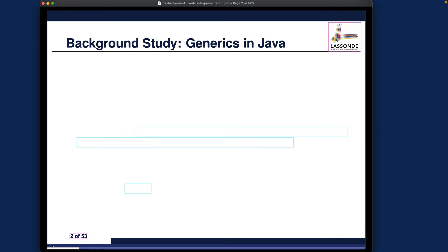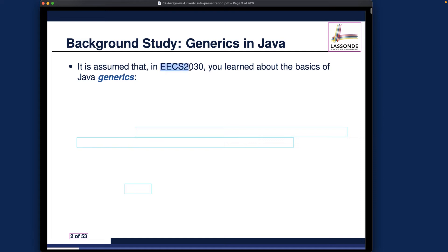Before I state the learning outcomes, I'd like to talk about the background study you are required to do. You are supposed to actually learn in EECS 2030, the advanced OOP course, about the basics of using Java generics. Take a look at these three bullet point items I mentioned. If you feel very confident about each one of them, you may be able to just skip this particular review. Otherwise, I would highly recommend you take a look at the study materials I made available to you.